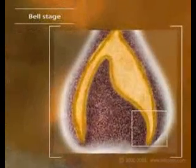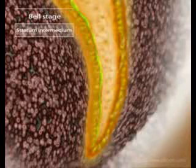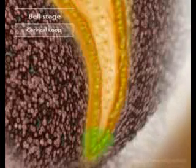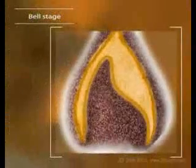The stellate reticulum is made up of star-shaped cells pushed apart by fluid pressure, separating the inner and outer enamel epithelium. Just visible is a flattened area of cells called the stratum intermedium. We can also see the juncture where the inner and outer enamel epithelium meet — this cervical loop is important in tooth formation, as we'll discover soon.